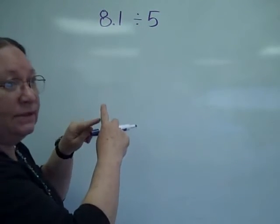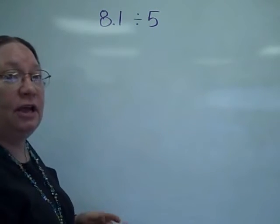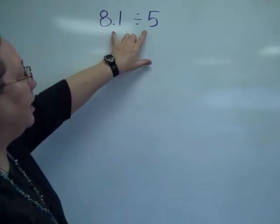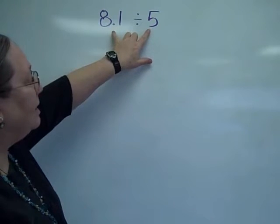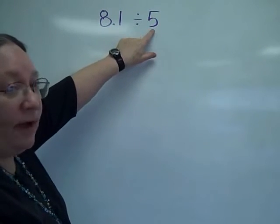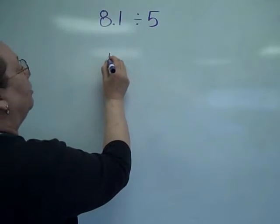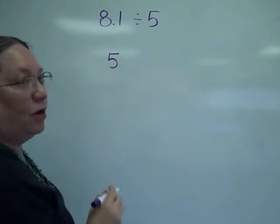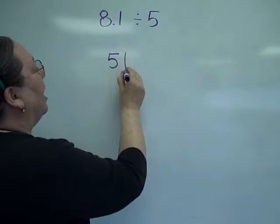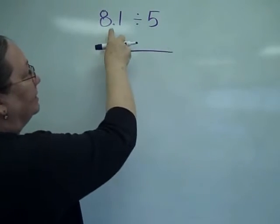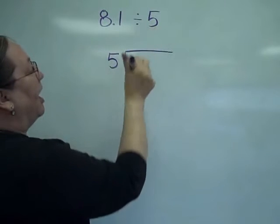But what we do is say 'into' is not on a calculator. So first of all, you have to be able to recognize that when you write this out, the divisor or the second number always goes on the outside of your division sign. So it's going to be 5 into, which is the same as divided by 5.